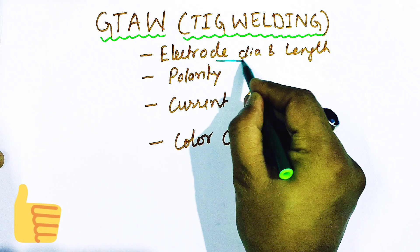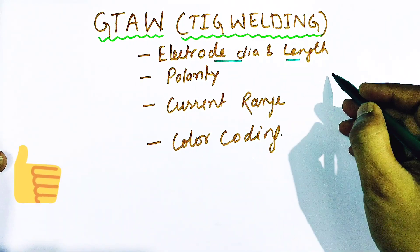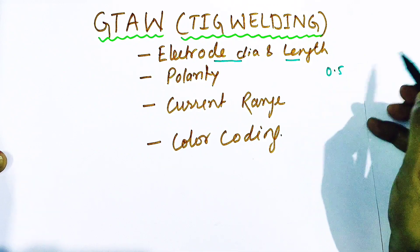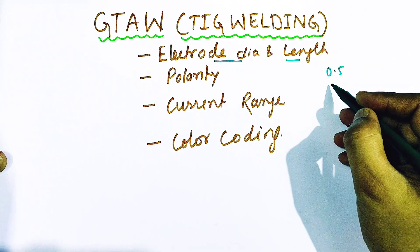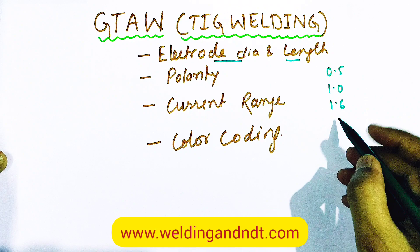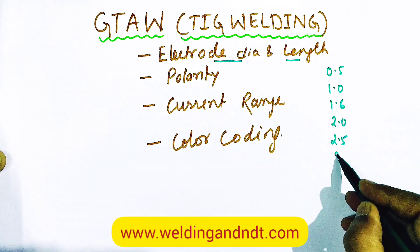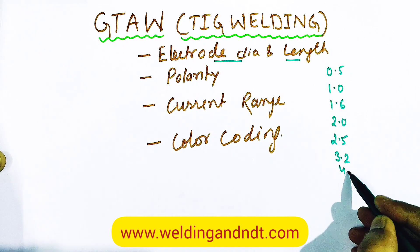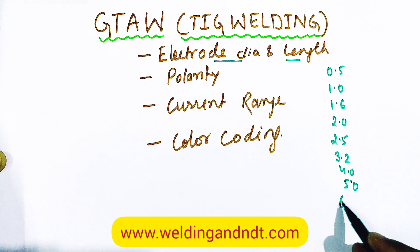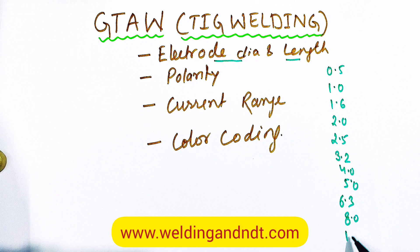First we'll start with the electrode diameter and length. Friends, the different diameters which are given in the code for TIG welding start from 0.5 mm, then 1.0, 1.6, 2.0, 2.5, 3.2, 4.0, 5.0, then 6.3, finally 8.0 and 10. So these are the diameters in millimeters.